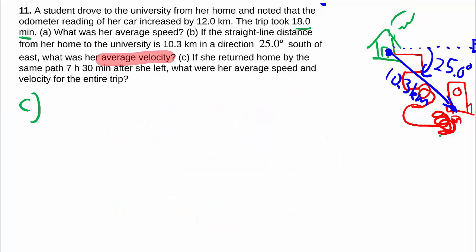Moving on to part c. Now she leaves school again and she goes back exactly the same path. So in this case for her calculation for the average speed you have twice the odometer increase, so that's now 2 times 12 kilometers which is 24 kilometers.